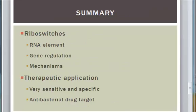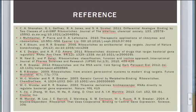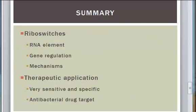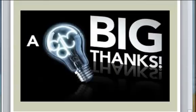In summary, we talked about riboswitches and what they are. They are RNA elements that regulate gene expression. There are three mechanisms in which riboswitches act: they either inhibit transcription or translation, or catalyze the autocleavage, also known as splice processing. Regarding therapeutic applications, riboswitches are very sensitive and specific, and they can be used for antibacterial drug targets. Thank you very much.